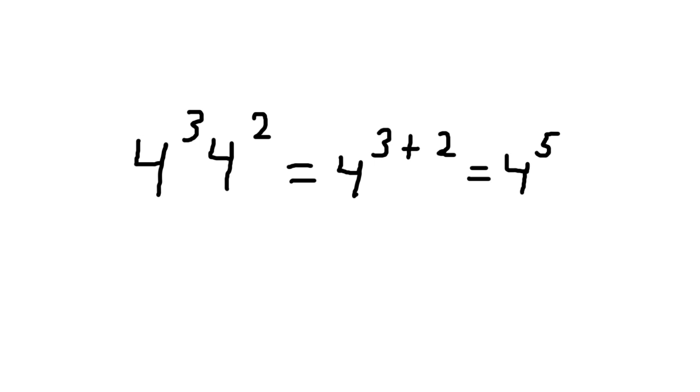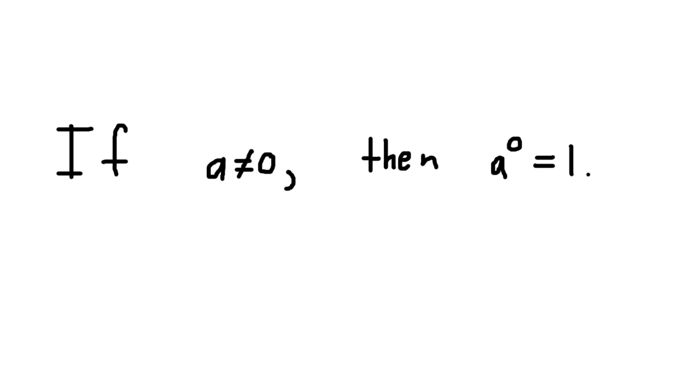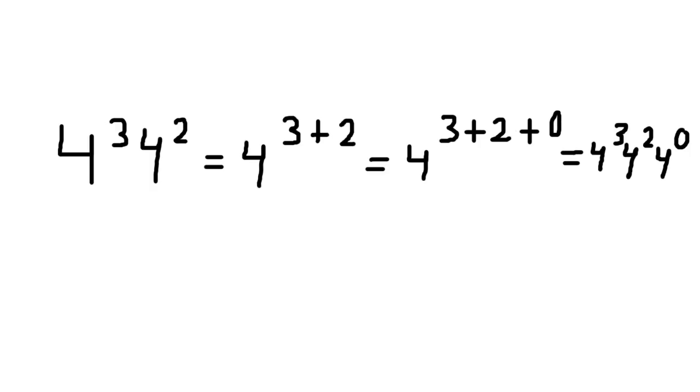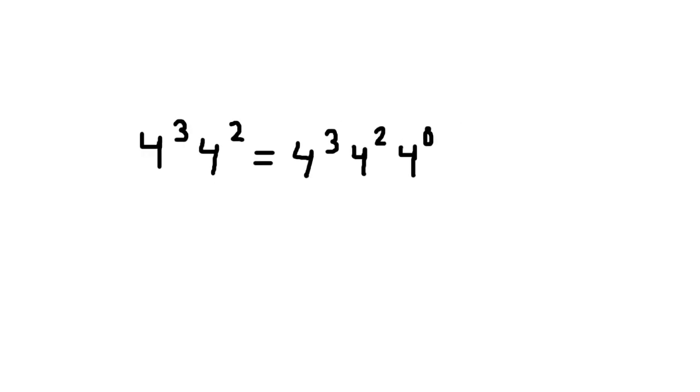We can also use this rule to prove that if a is not equal to 0, then a to the power of 0 is equal to 1. We have that what we started with is equal to what we started with multiplied by 4 to the power of 0. This would only work if 4 to the power of 0 were equal to 1, which is the multiplicative identity.